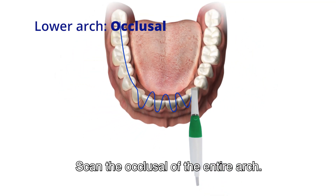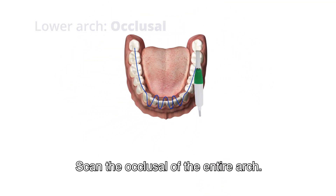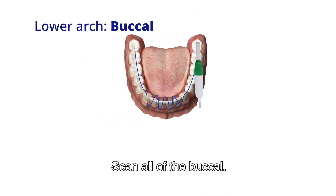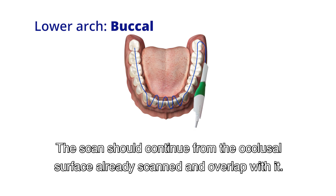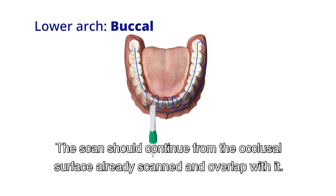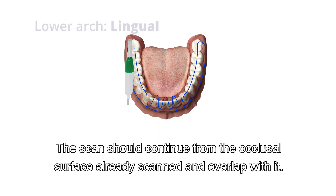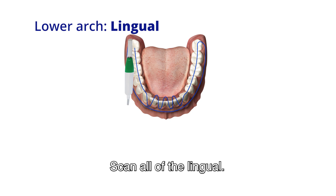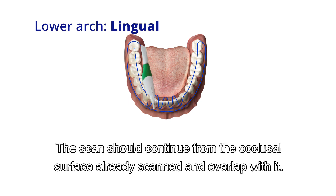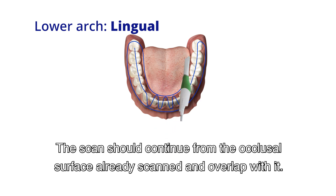Scan the occlusal of the entire arch. Scan all of the buccal. The scan should continue from the occlusal surface already scanned and overlap with it. Then scan all of the lingual. The scan should continue from the occlusal surface already scanned and overlap with it.